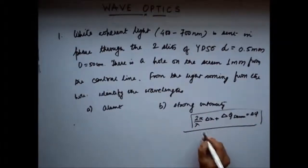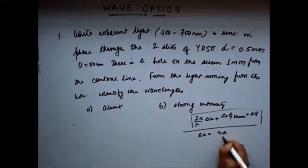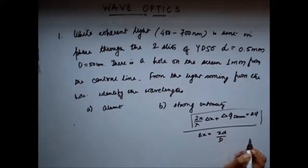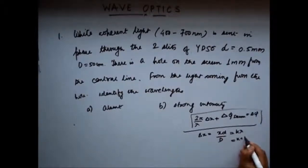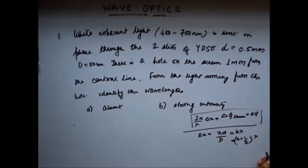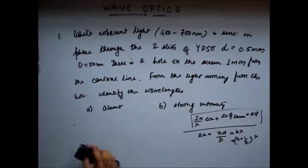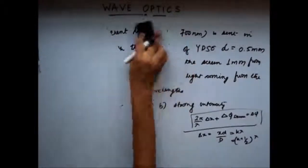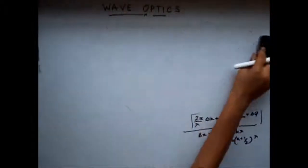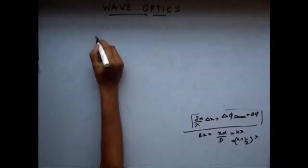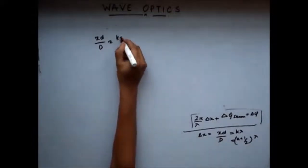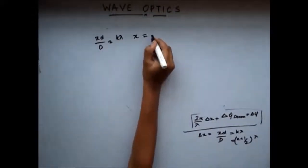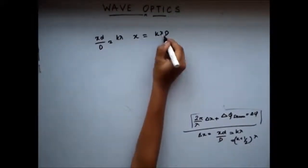In case of YDSE, Δx = xd/D. For constructive interference, Δx should equal kλ, so xd/D = kλ, which gives x = kλD/d. I am solving part B first — finding wavelengths for which constructive interference occurs at one millimeter from the center line. So x is one millimeter, D is 50 centimeter or 500 millimeter, and d is 0.5 millimeter.